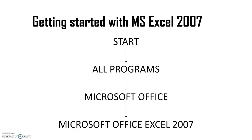Now let's see how to invoke MS Excel 2007. Click on Start, select All Programs, select Microsoft Office, and then select Microsoft Office Excel 2007. Here is another method for opening Excel: click on the MS Excel icon on the desktop screen, if it is available.